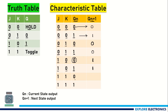For J=1, K=1 with the previous state 0, it will toggle. We say this will be toggled because when J=1, K=1 comes as input to the JK flip-flop, 0 at the current state will be changed to 1 in the next state — this is toggled to 1.